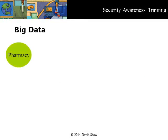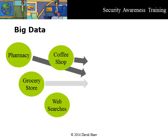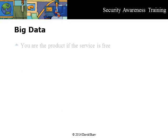Your health insurer, for example, could find out which medications you take, what your diet is like, how much coffee you drink, and how many times you searched online for things that might indicate risky sexual behavior. It's a security principle in government and business that aggregated information is more sensitive than its individual components. Always remember that if the service is free, you are the product that is being sold to someone else.